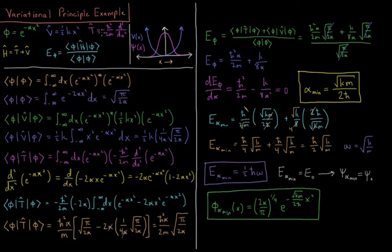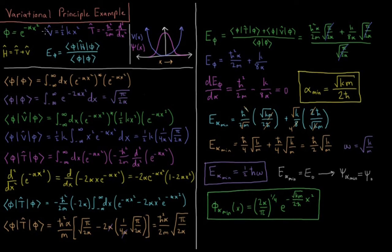Our kinetic energy operator is minus h-bar squared over 2 times mass, second derivative with respect to x. For the harmonic oscillator we typically use reduced mass, but here we'll just use m for simplicity. The potential energy is one half kx squared, a parabola centered at the origin. The trial wave function is a Gaussian, e to the minus alpha x squared, centered at the origin, where alpha determines how diffuse or contracted the function is.